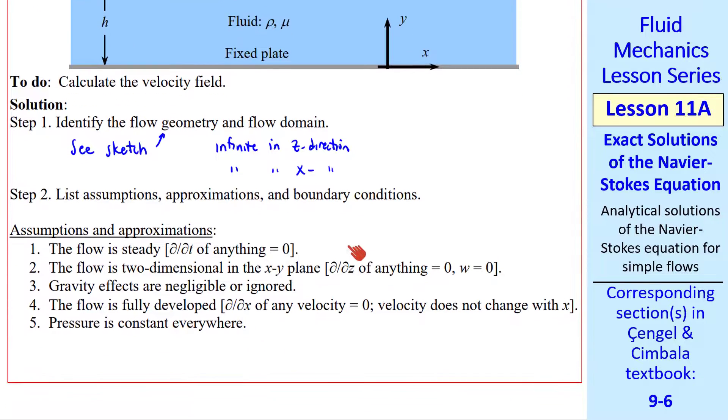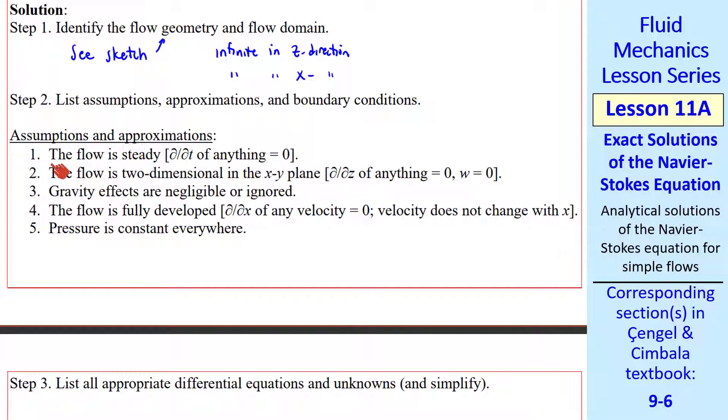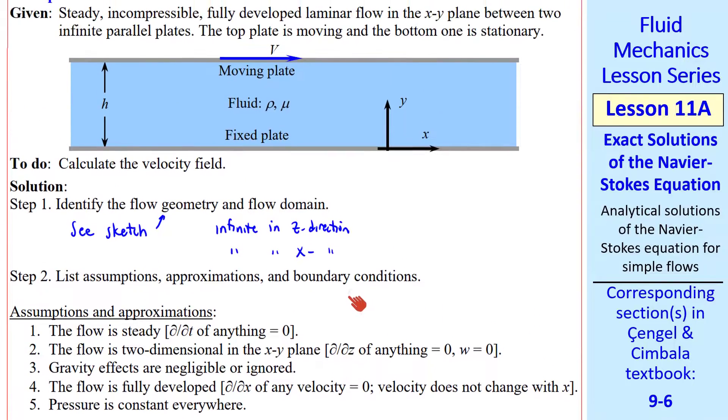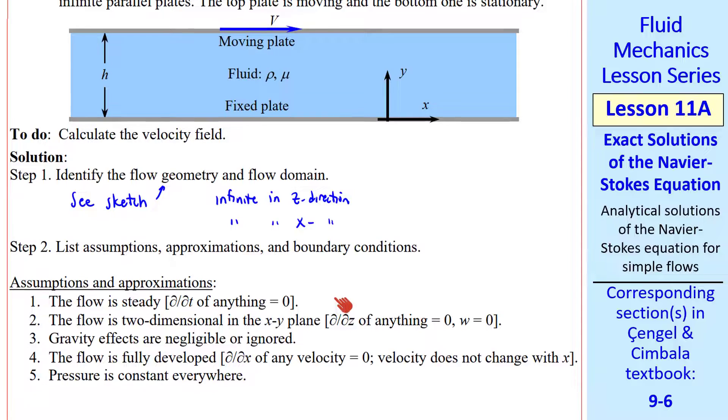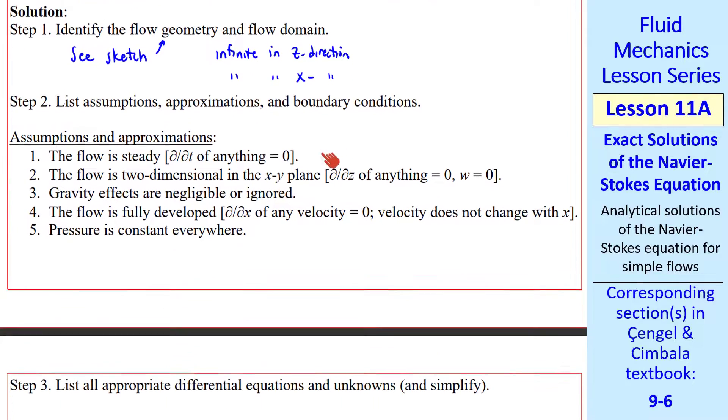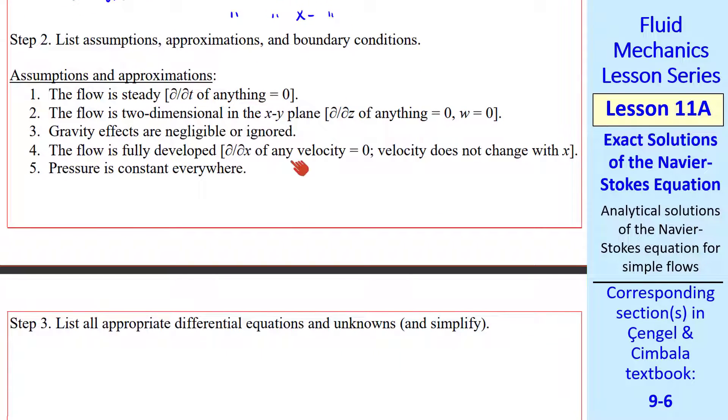Step two: list assumptions, approximations, and boundary conditions. The flow is steady, which means del del t of anything is zero. The flow is 2D in the xy-plane, which means del del z of anything is zero and there's no w component. Gravity effects are negligible. The flow is fully developed, which means del del x of any velocity is zero. And pressure is constant everywhere.